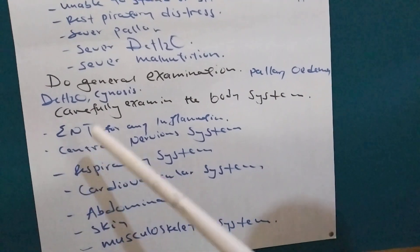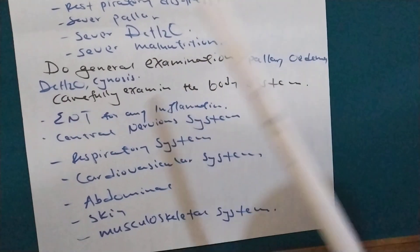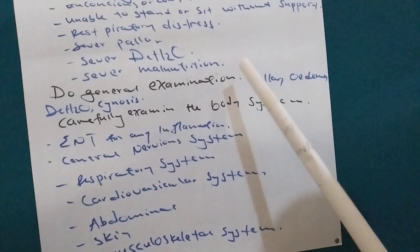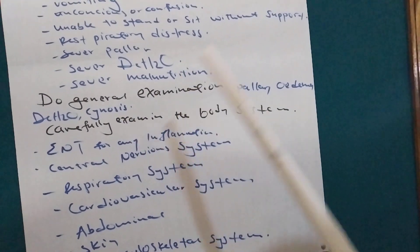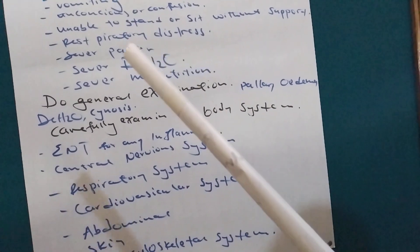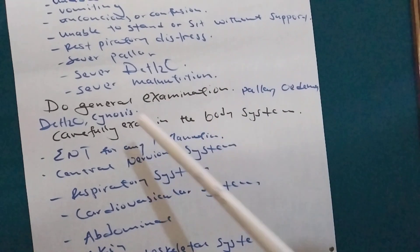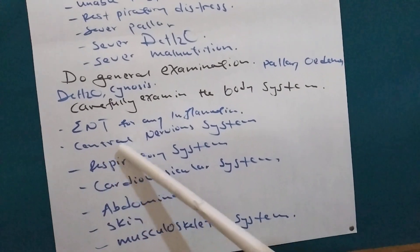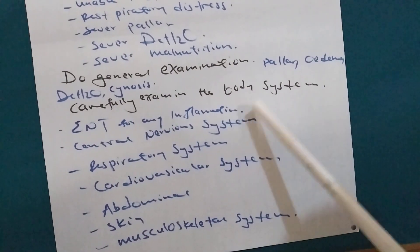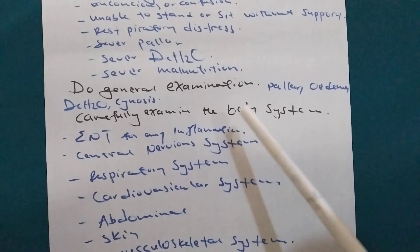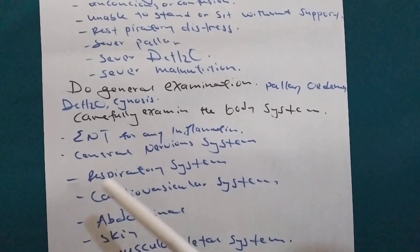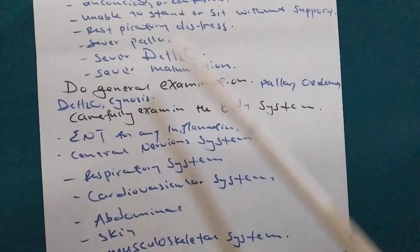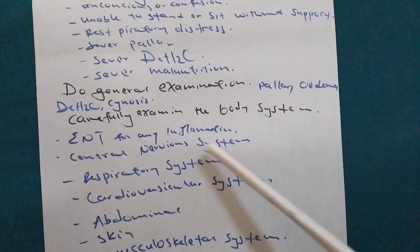Then we are going to carefully examine the body systems. If you remember the signs and symptoms from part one, most of these things can resemble other conditions, but we will rule them out by examining each system. We are going to see the ear, nose, and throat for any inflammation — we will rule out tonsillitis and ear infection. Then we have the central nervous system, where we mostly look for convulsion and confusion, and we rule out meningitis.